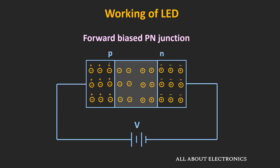Now as we had seen in the earlier video of P-N junction diode, whenever it is forward biased, the holes on the P-side start moving towards the N-side. And similarly, the electrons on the N-side start moving towards the P-side. And in a way, both holes and electrons contribute to the flow of current.